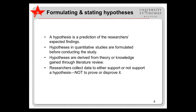In quantitative research, researchers make predictions about how the results will turn out. These predictions are called hypotheses. Hypotheses are formulated before data collection and are generally based on theory or knowledge gained through a careful review of the literature — that is, previous studies on the topic. Once the data are collected and analyzed, researchers can conclude that the hypothesis was either supported or not supported, but not proven or disproven.